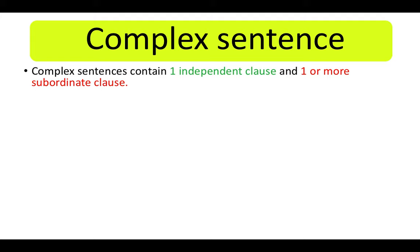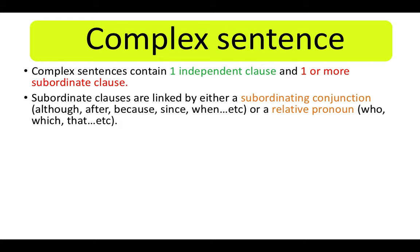Complex sentences contain one independent clause and one or more subordinate clauses. Subordinate clauses are linked by either a subordinating conjunction — for example: although, after, because, since, when, etc. — or a relative pronoun.